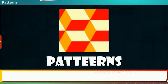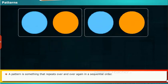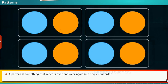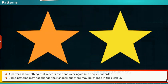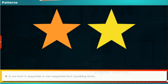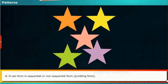How many forms of patterns are present? A pattern is something that repeats over and over again in a sequential order. Some patterns may not change their shapes, but there may be a change in their color. It can form in a sequential or non-sequential form, jumbling form.